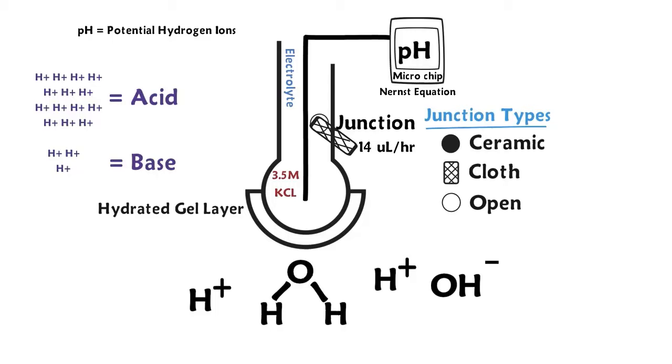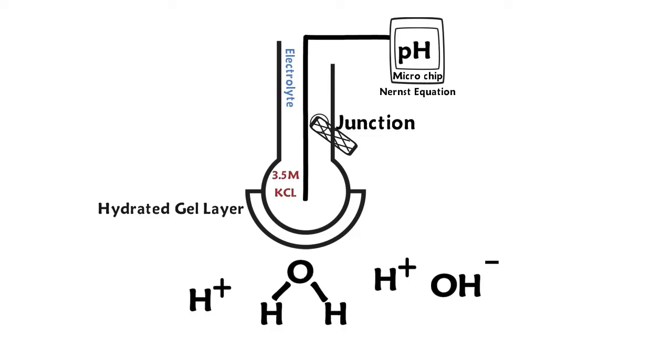Now, we are going to show how all these parts work together to get you a pH reading in a few seconds. Submerge your pH electrode so that the junction is in contact with your solution. The electrolyte will begin to leak out of the junction at 14 microliters per hour.